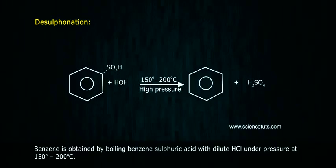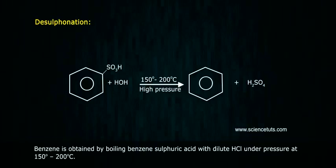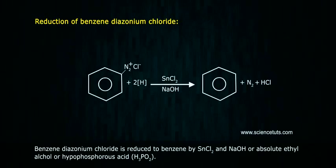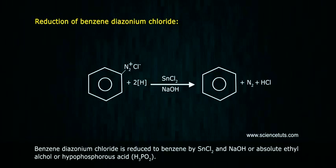Desulfonation: Benzene is obtained by boiling benzenesulfonic acid with dilute HCl under pressure at 150°C to 200°C. Reduction of benzene diazonium chloride: Benzene diazonium chloride is reduced to benzene by SnCl2 and NaOH, or absolute ethyl alcohol, or hypophosphorous acid (H3PO2).